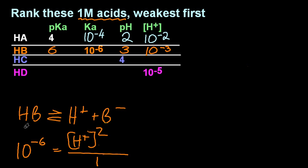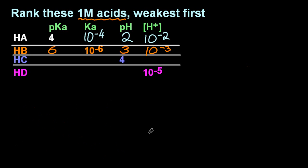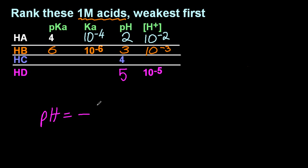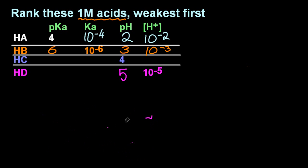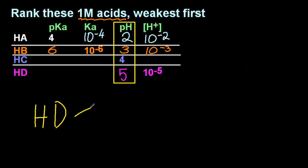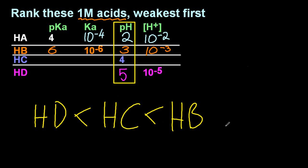pH is the negative log of the hydrogen ion concentration. HC is easy, but HD — I'm going to take that 10 to the minus 5, that gives pH 5. So now I have all the rankings: 2, 3, 4, and 5 for the pH. Ordering them weakest first: HD, HC, Hb, and finally Ha.